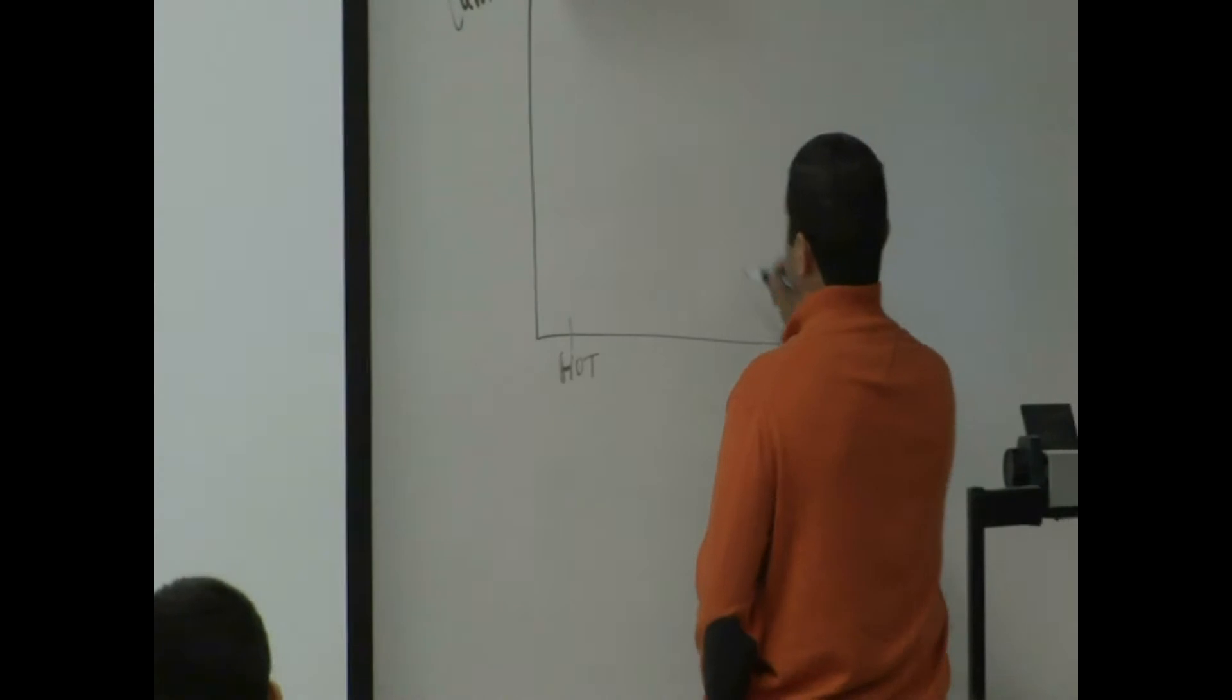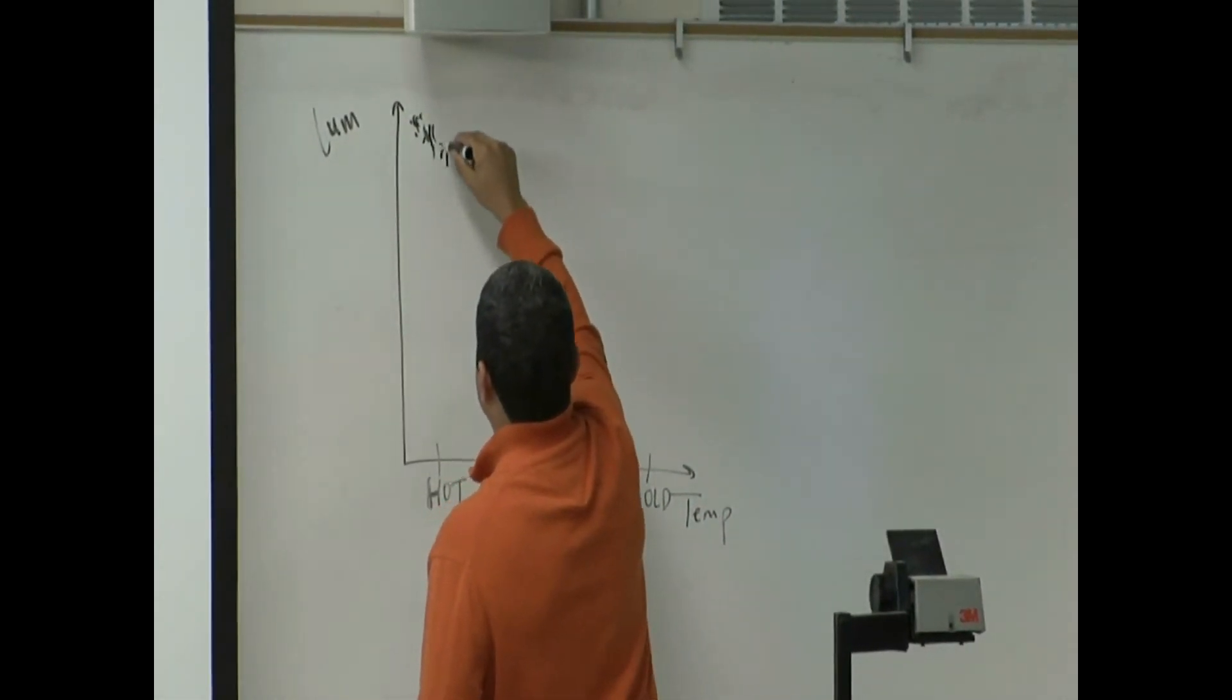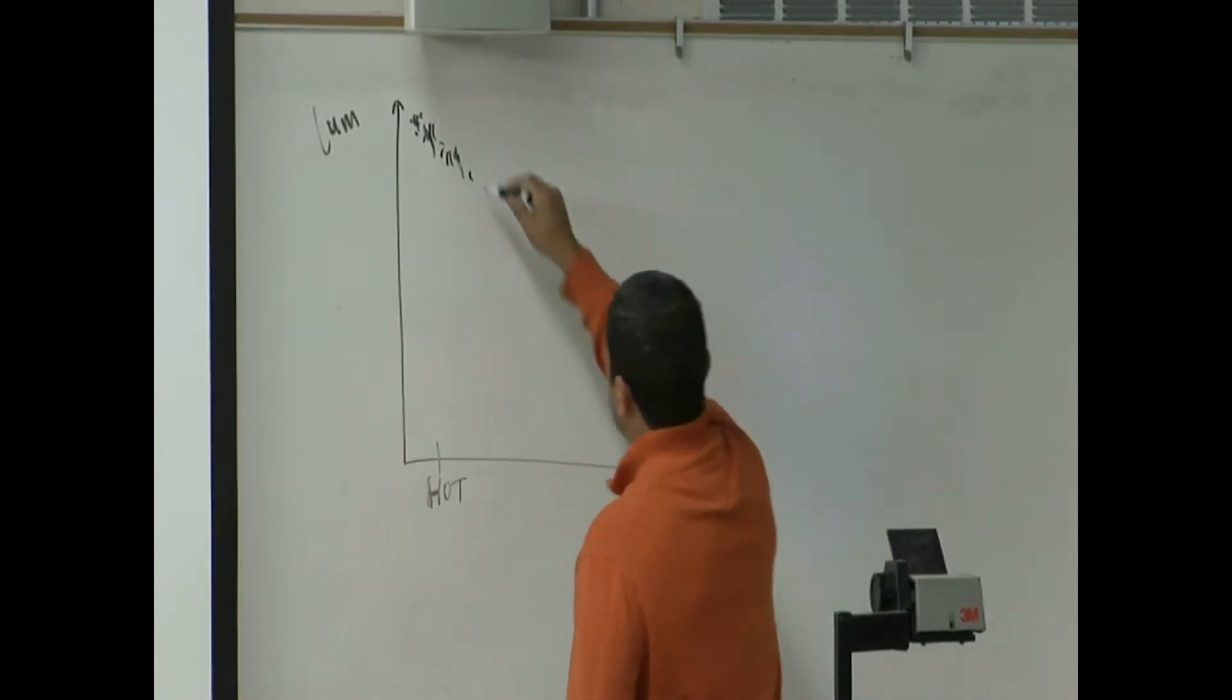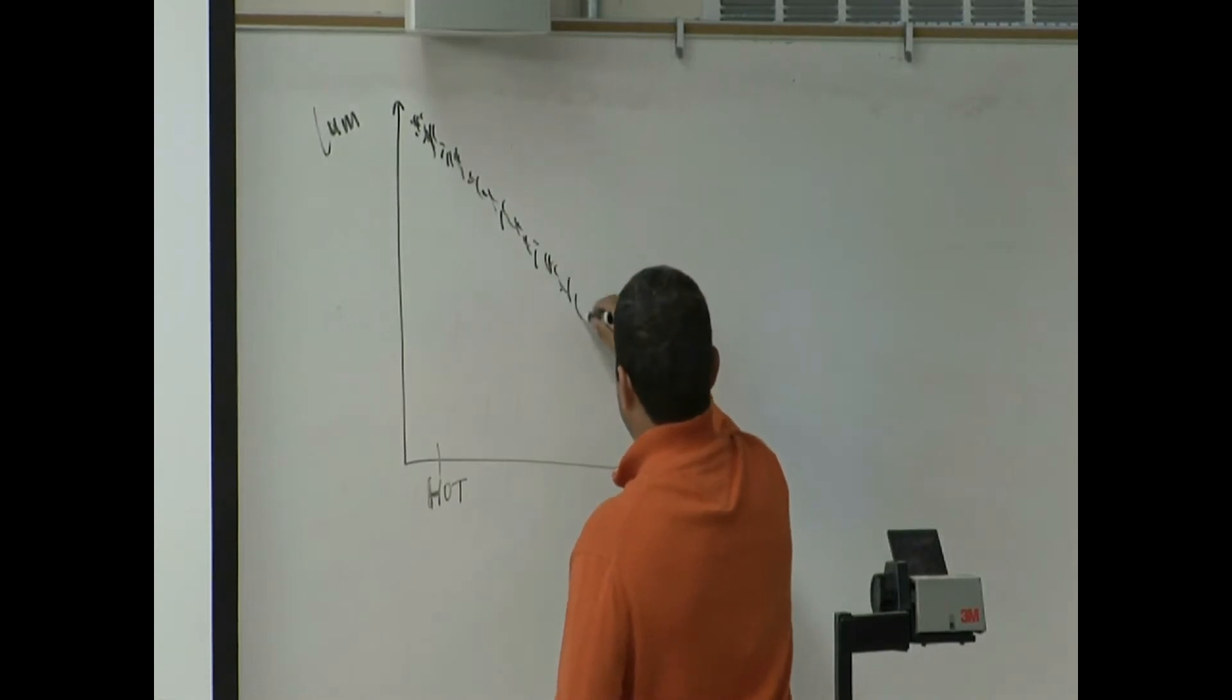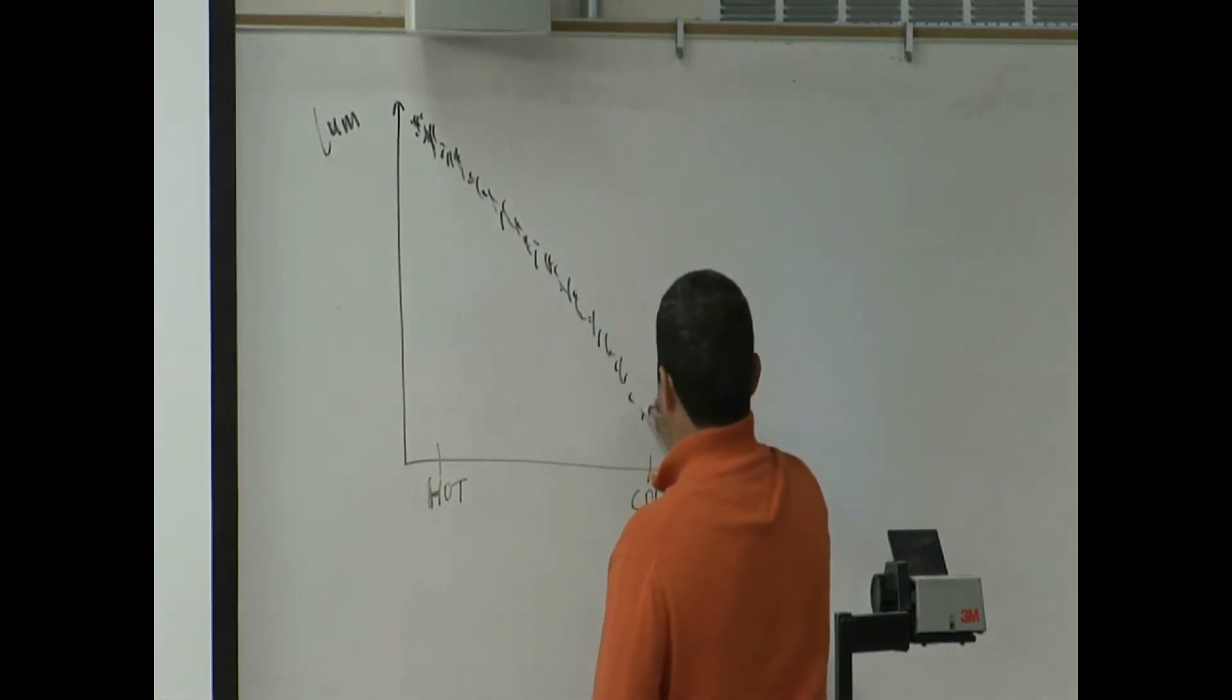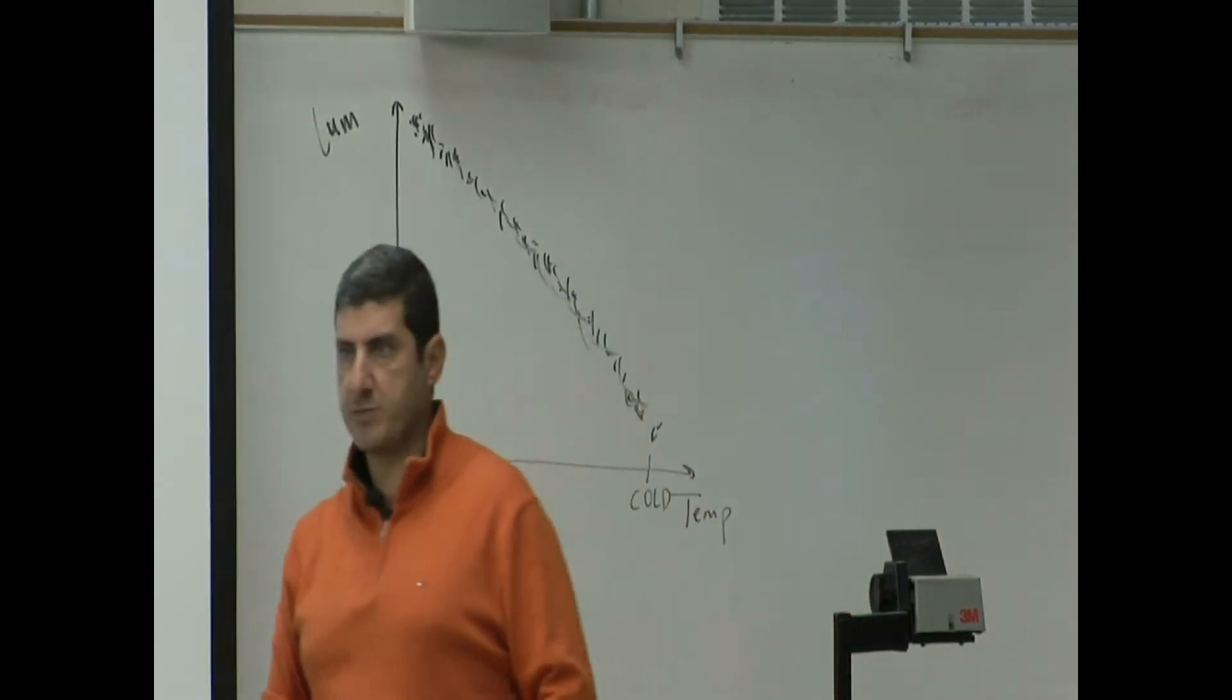You'll see a pattern like this. When a star is hot, it'll be a bright star. And then as the star is cold, the luminosity will decrease. So generally you'll see this behavior for stars.